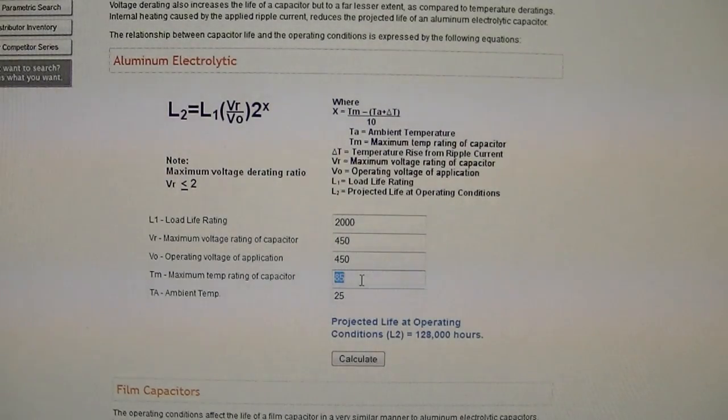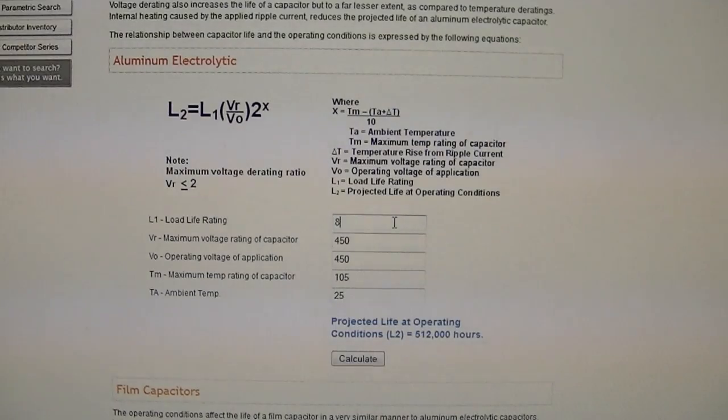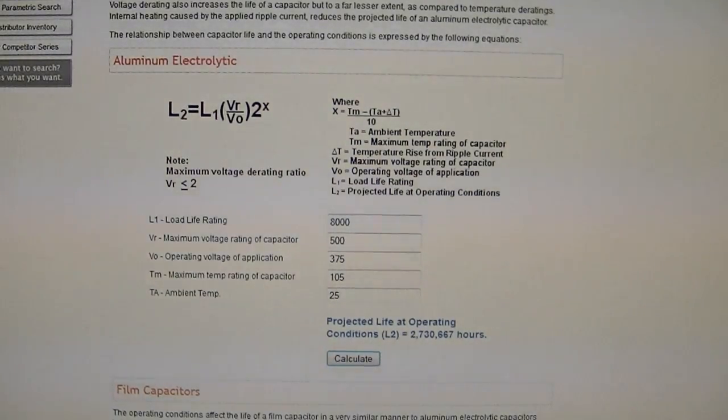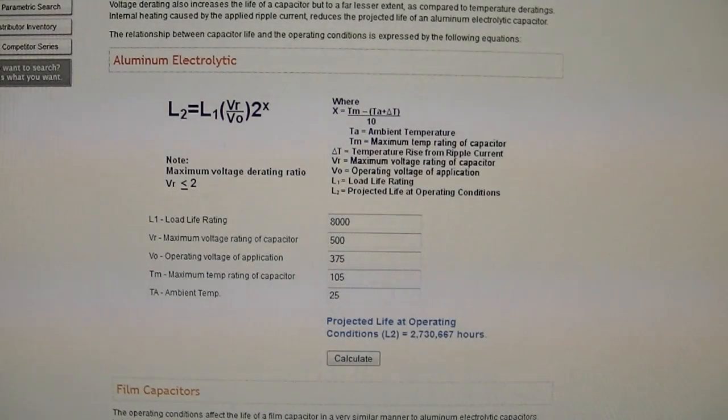So what about if we go to a 105 degrees Celsius rated cap? Look at that, 512,000 hours. And how about if I go with a cap like I just bought, that are rated for 8,000 hours to begin with. And let's say it's a 500 volt cap. Maybe it's only running at 375. 2.7 million hours. That's why I bought the caps I bought. Overkill, to be sure, but for a few pennies or a few bucks more, why not? So let's see. What's 2.7 million hours in terms of days and years? Over 100,000 days or over 300 years. So, pretty safe there, I would say.